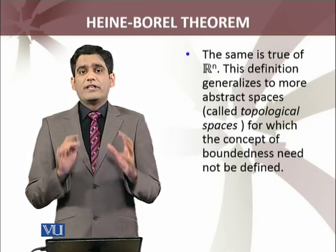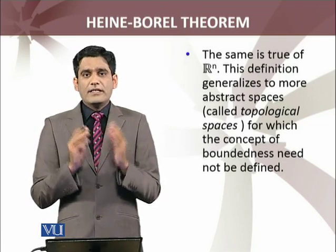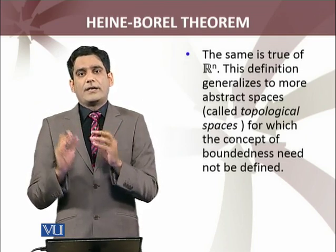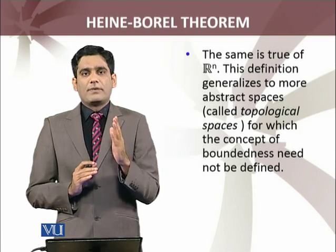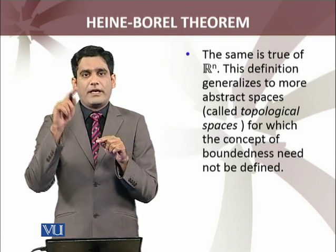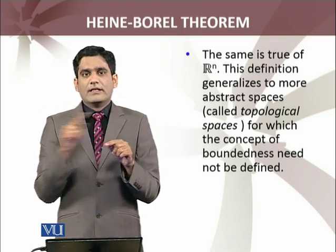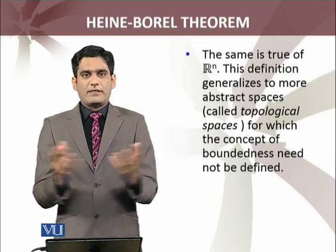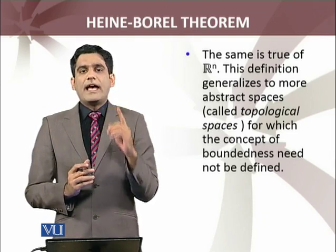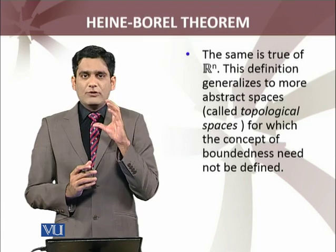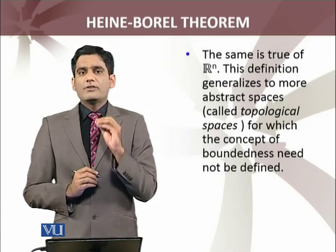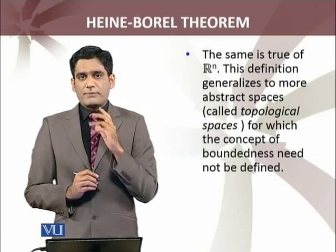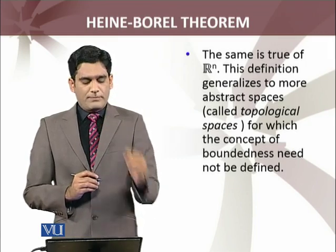This theorem is also valid for Euclidean spaces. What are Euclidean spaces? These are just the Cartesian product of R up to n times. When N equals 1, you have the real numbers. When N equals 2, you have the plane — it is the Cartesian product of the real line with the real line, which we call the XY-plane. When N equals 3, that is R³, which is three-dimensional space, and so on. N is a positive finite integer — these are called Euclidean spaces. In fact, this theorem is also valid for more generalized spaces called topological spaces.